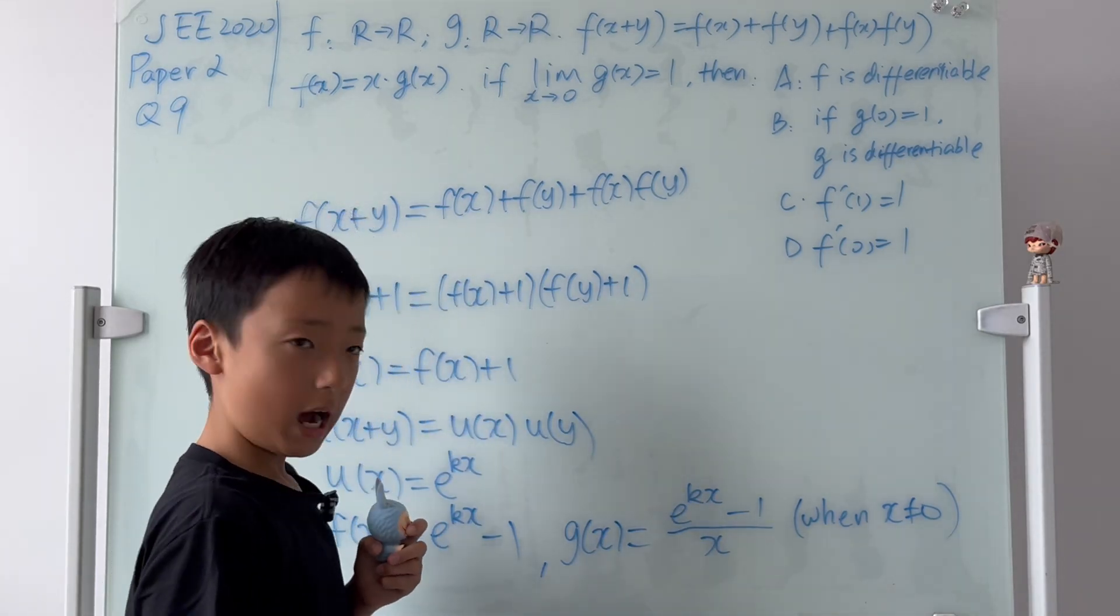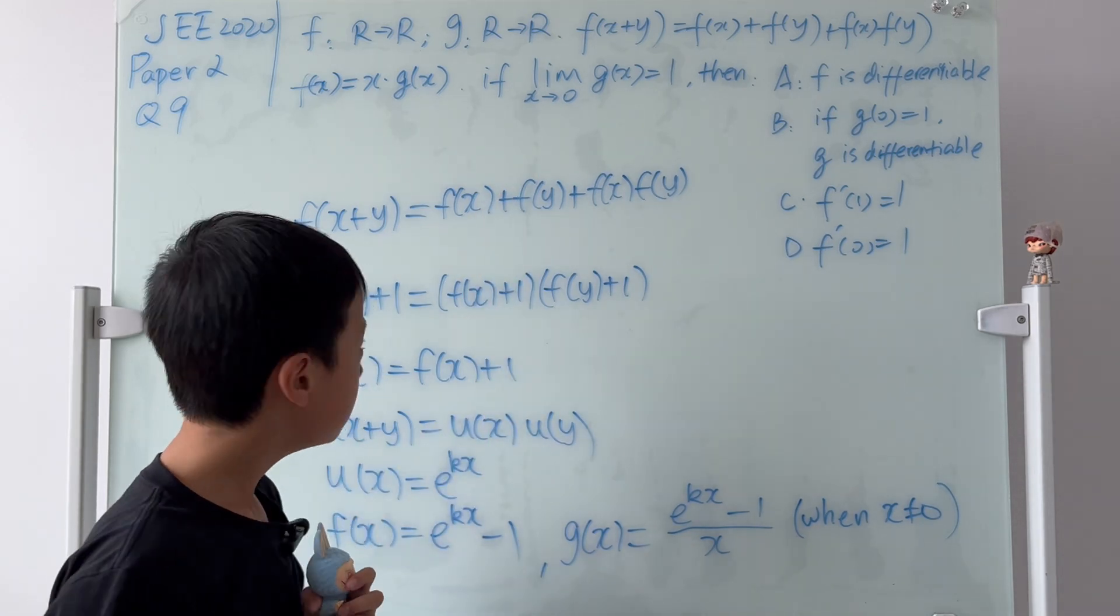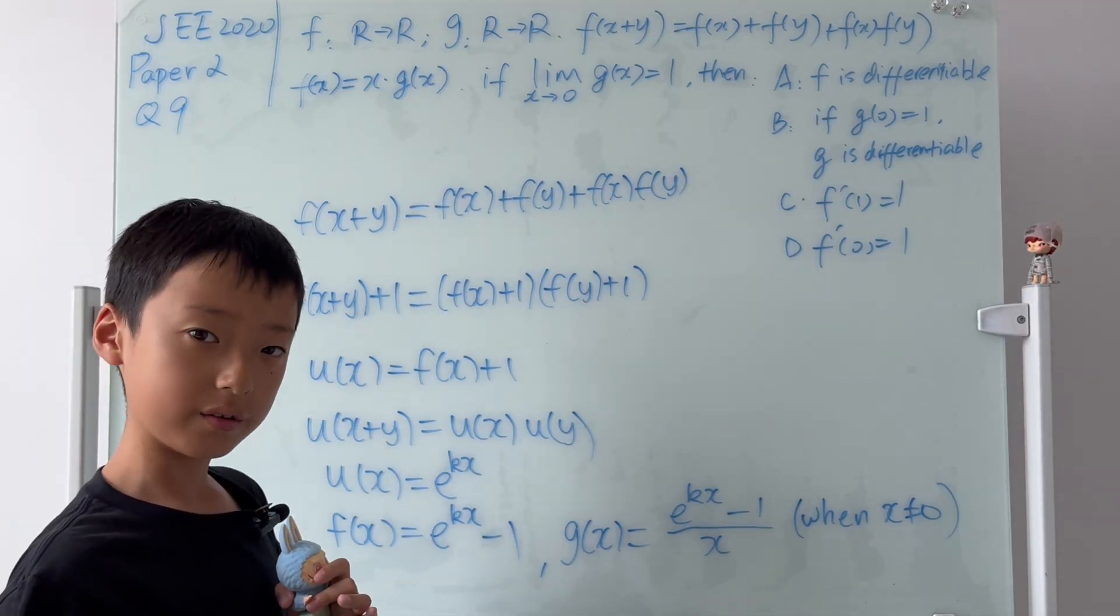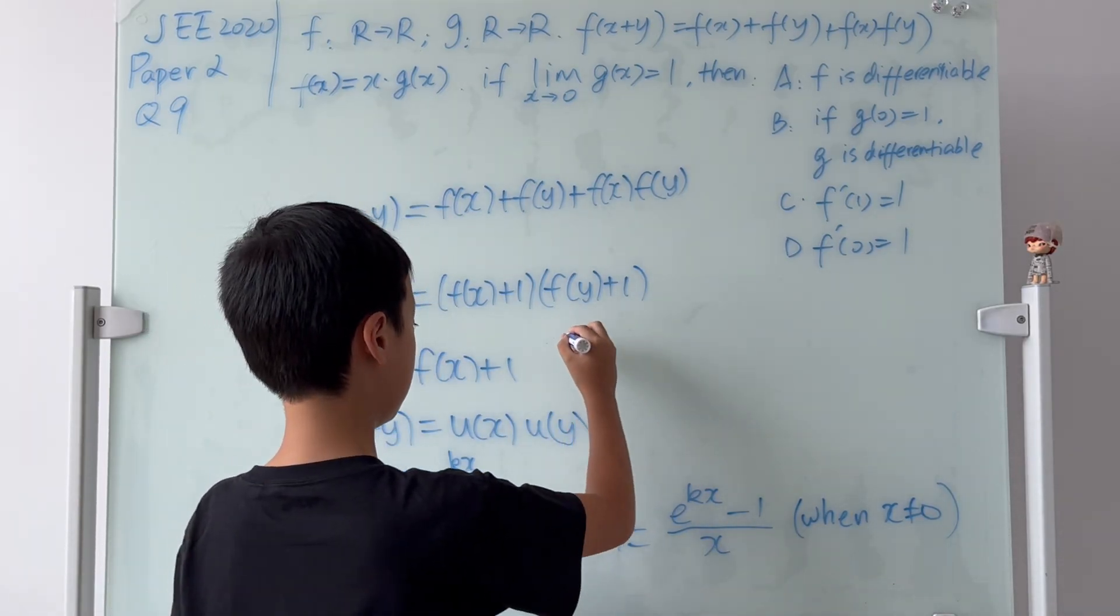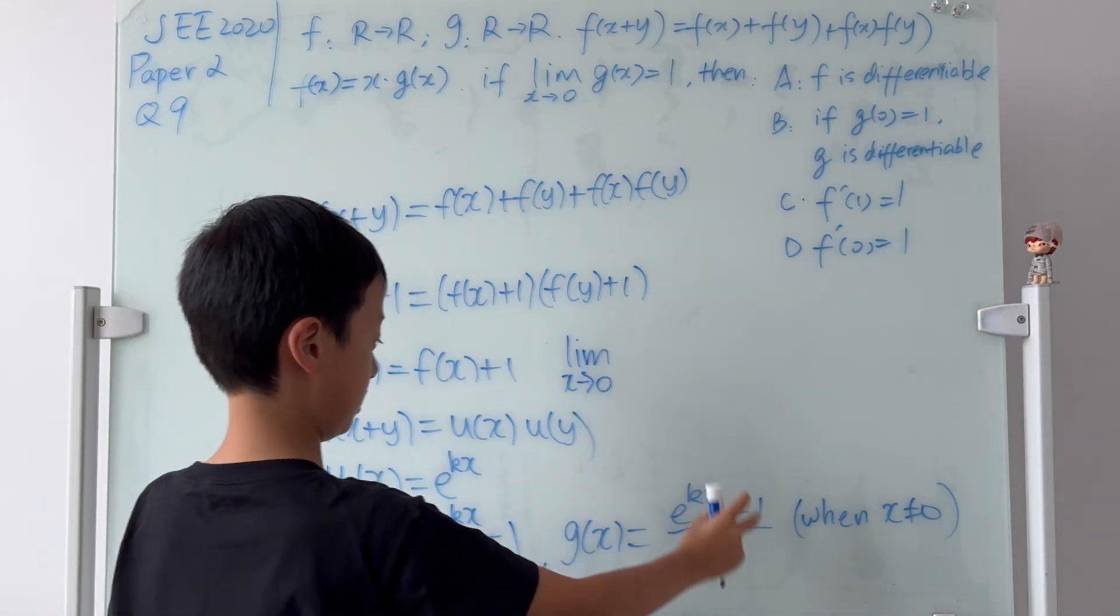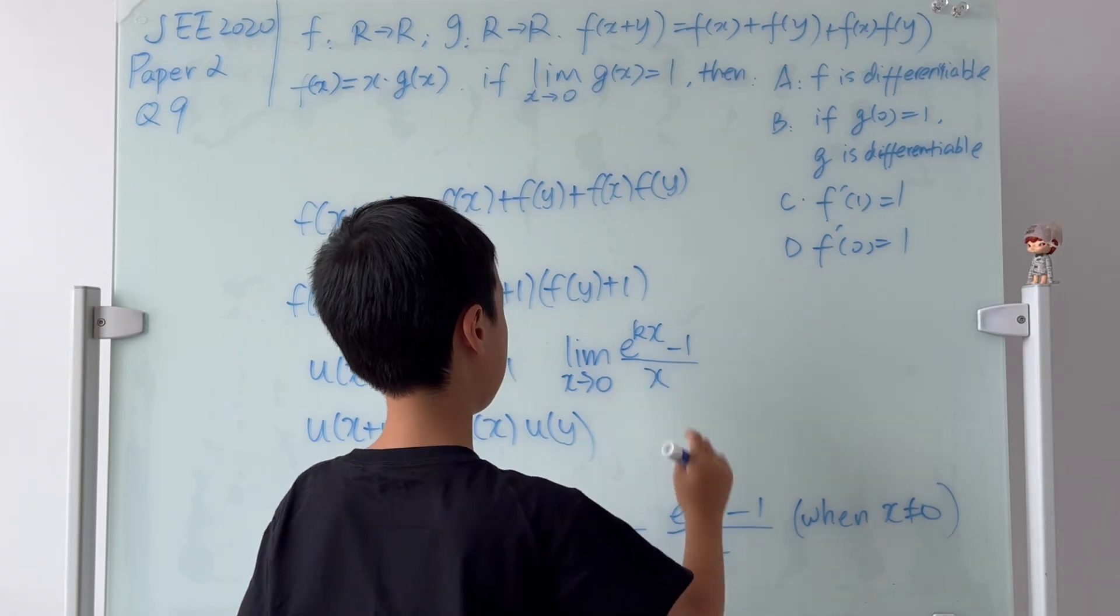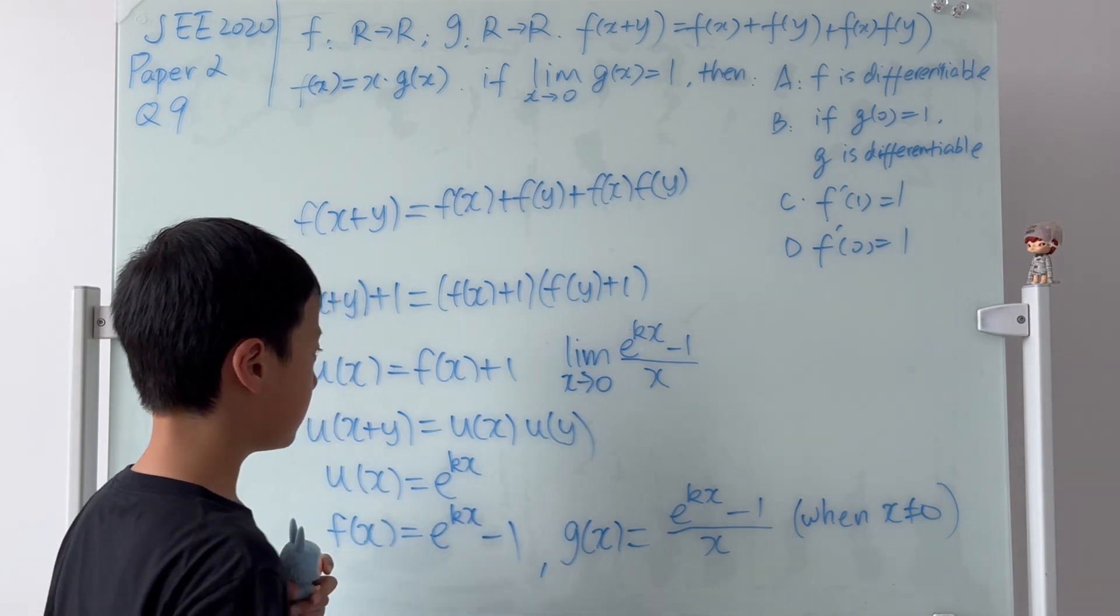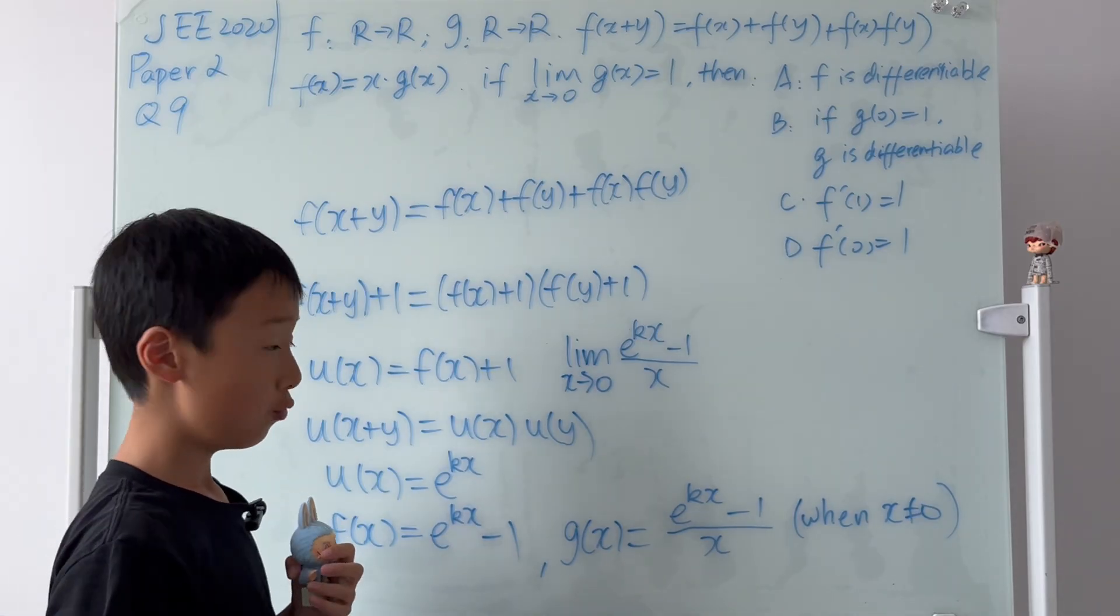So how do we figure out k? Well, did you read every single word of the given information? It says that if the limit of x goes to 0 of g(x) is equal to 1. So why don't we just try and plug that in? So I'm just going to write it over here. The limit as x goes to 0 of g(x), which is this, equals 1. But that's not our goal. We have to figure out what k is. Now, let's plug in 0 into all of the x's. What we get? We get a 0 over 0 case.